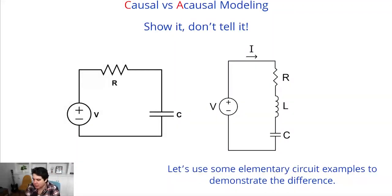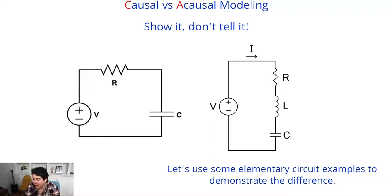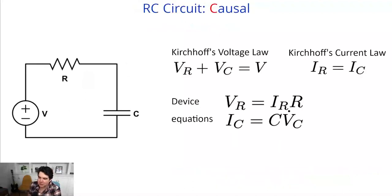In terms of show, don't tell, I'm going to do an example where I take one model, build a causal model of the RC circuit, and then extend it to the RLC circuit. What I want to show is why even causal modeling libraries that do have circuit components often special-case them so you don't have to build in a causal way. Circuit diagrams actually end up being one of the worst-case scenarios for causal modeling, so let's figure out why.